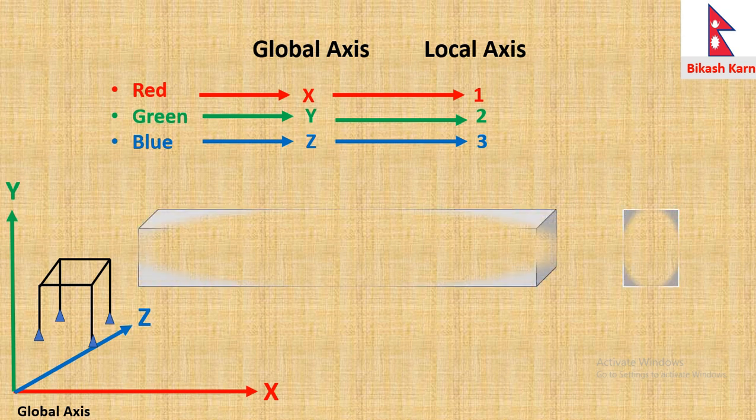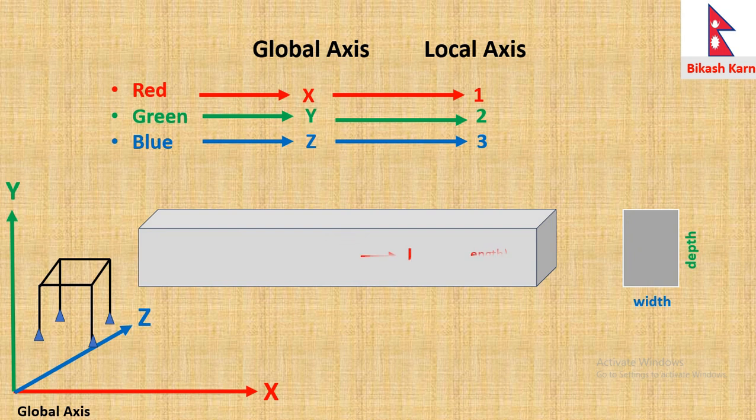For example, let's have a look at one of the beams. It will have local 1 along its length, 2 along depth, and 3 along width.